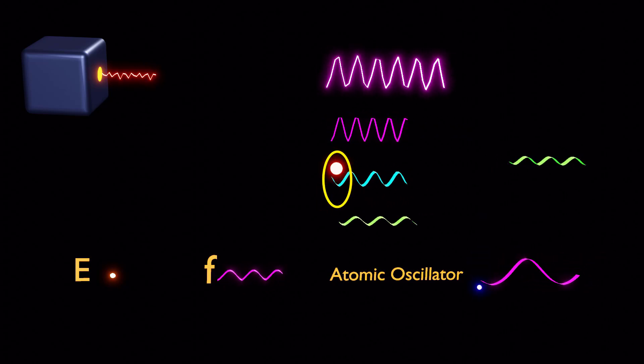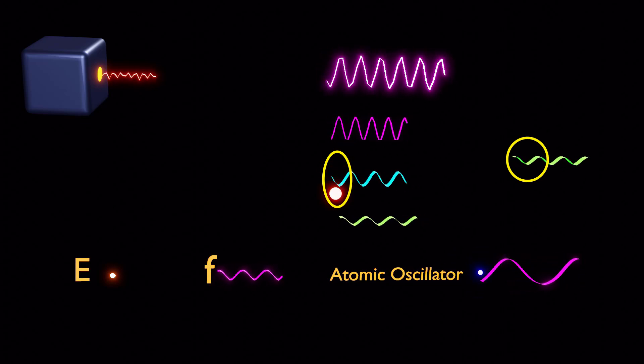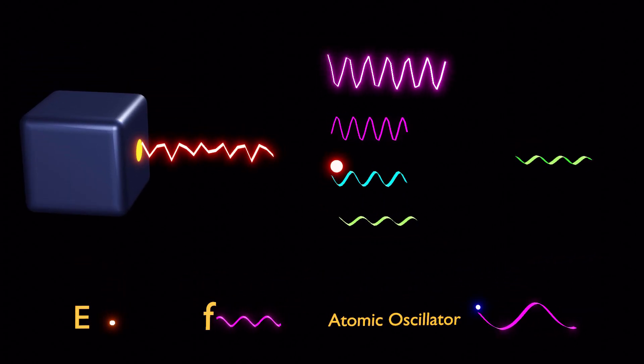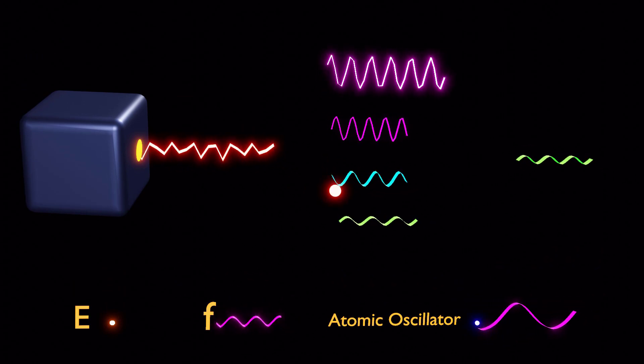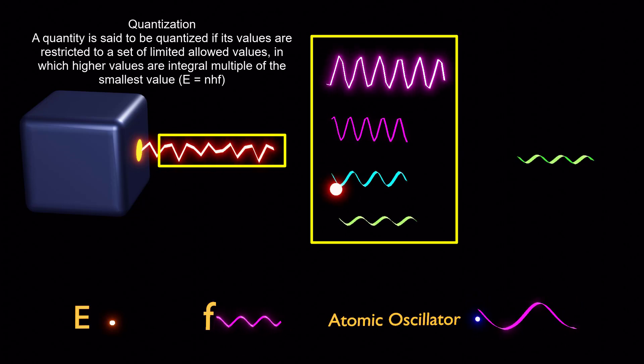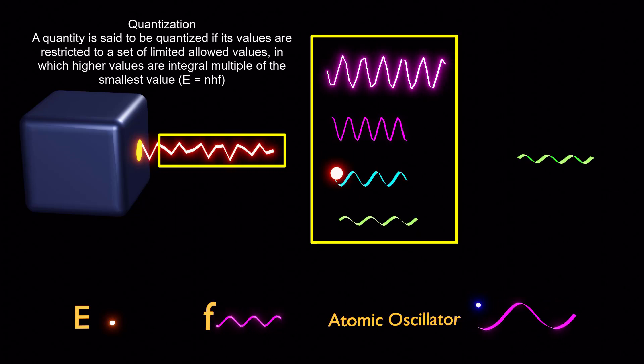An oscillator cannot emit a fraction of its energy, but rather emit energy in discrete quanta. The energy of emitted radiations cannot take continuous values, rather energy is quantized and its values belong to a set of limited allowed values.